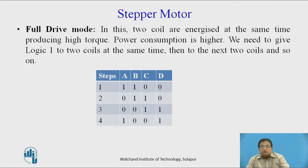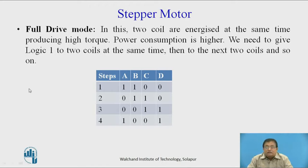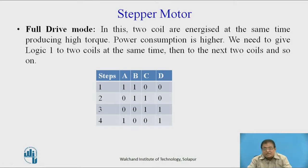In full drive mode, two coils are excited at the same time. The power consumption is higher. We give logic one to two coils at the same time, then the next two coils, and so on. In the first step, coils A and B are excited; in the second step, B and C; then C and D; then D and A. You must follow this proper sequence. When you send this one sequence, the motor will rotate by 1.8 degrees.